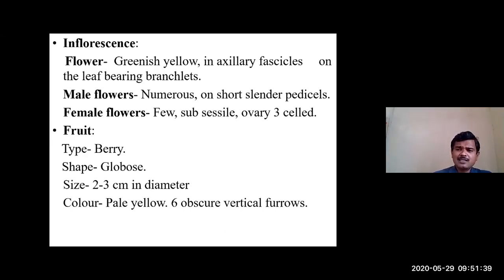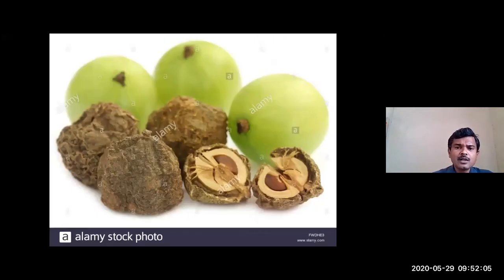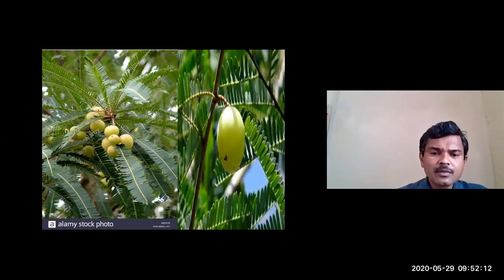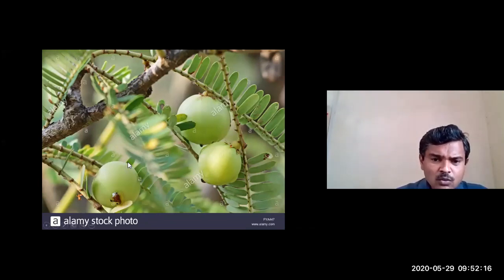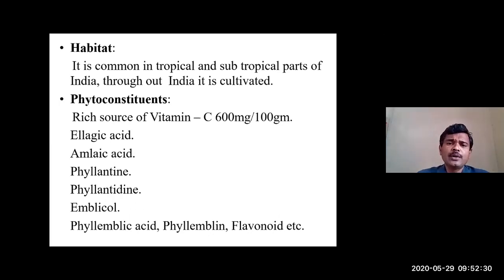Regarding the fruit: the type is berry, shape is globose, size is two to three centimeters in diameter. The color is pale yellow, and after completely ripening it turns to yellowish color. Six obscure vertical furrows are present over the fruit - you can observe these lines running over the surface.